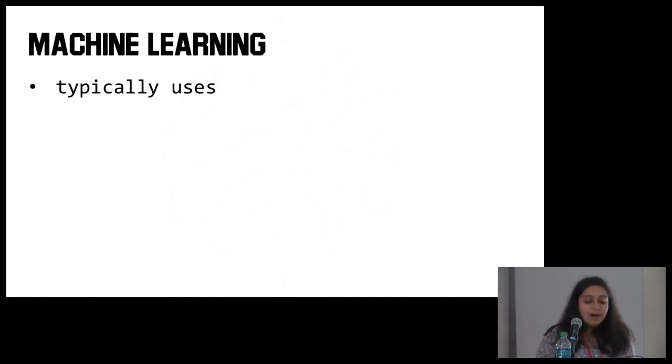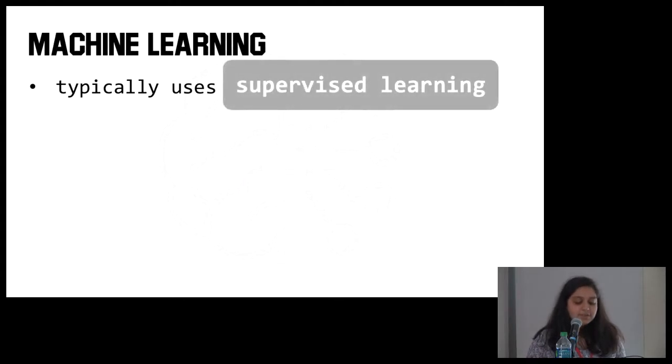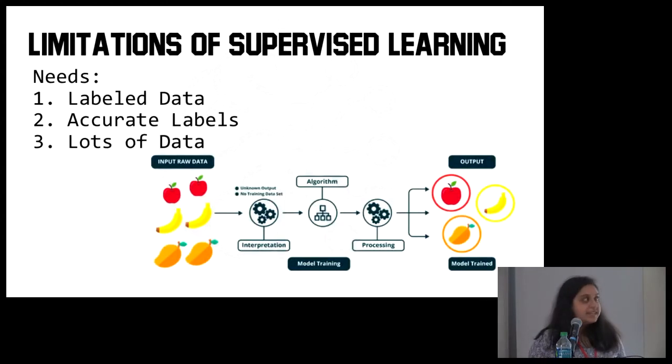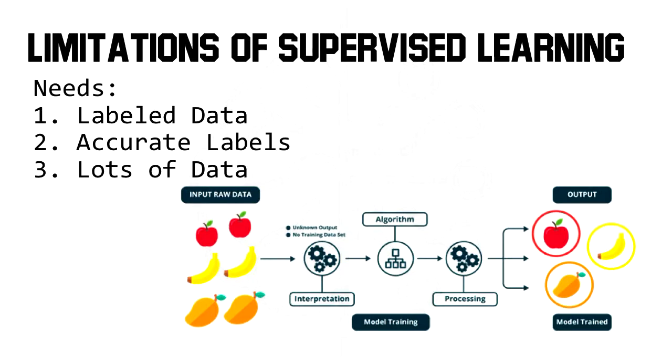Machine learning is an umbrella term. It typically uses something called supervised learning. Supervised learning could be used to find direct correlation between genes and cancer types. That sounds really ideal until we run into the big issue, because supervised learning is pretty limited because it needs three main things: it needs labeled data, accurate labels, and a lot of data. In the situation that this project is in, we only have about 11,000 examples to work with. That may sound like a lot until you realize that when you're working with something like 30 cancer types, each type is going to need at least 1,000 examples.